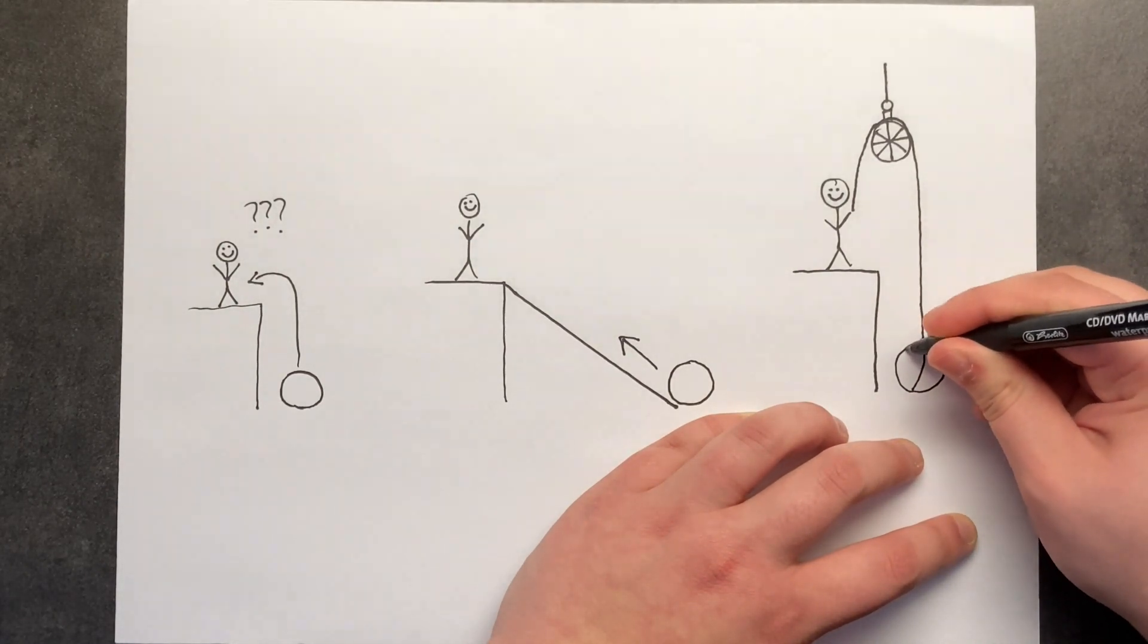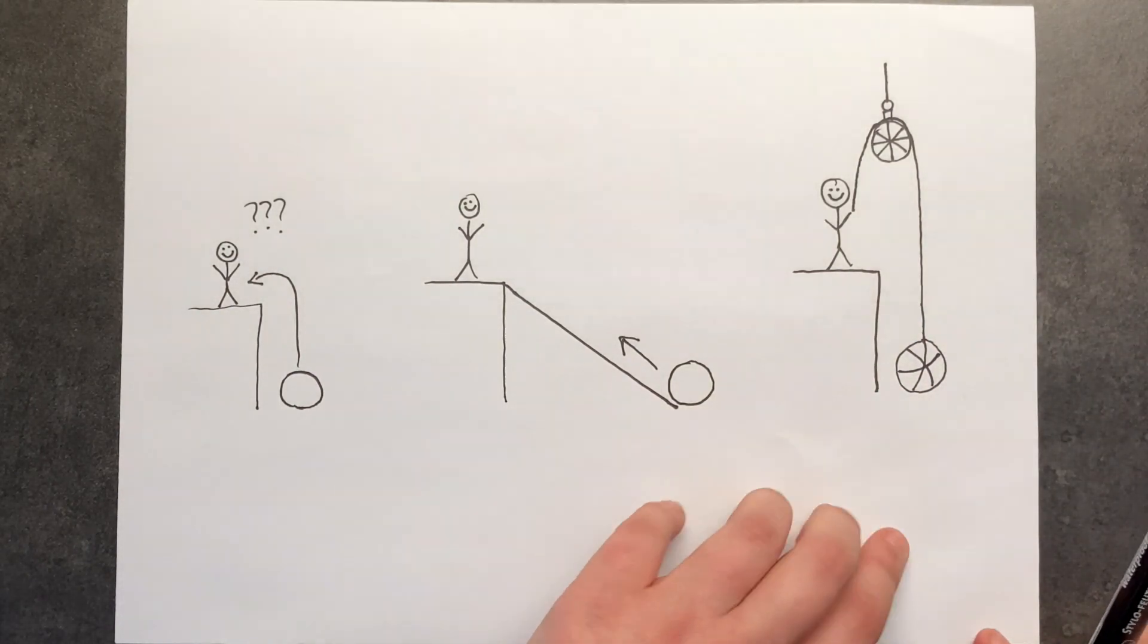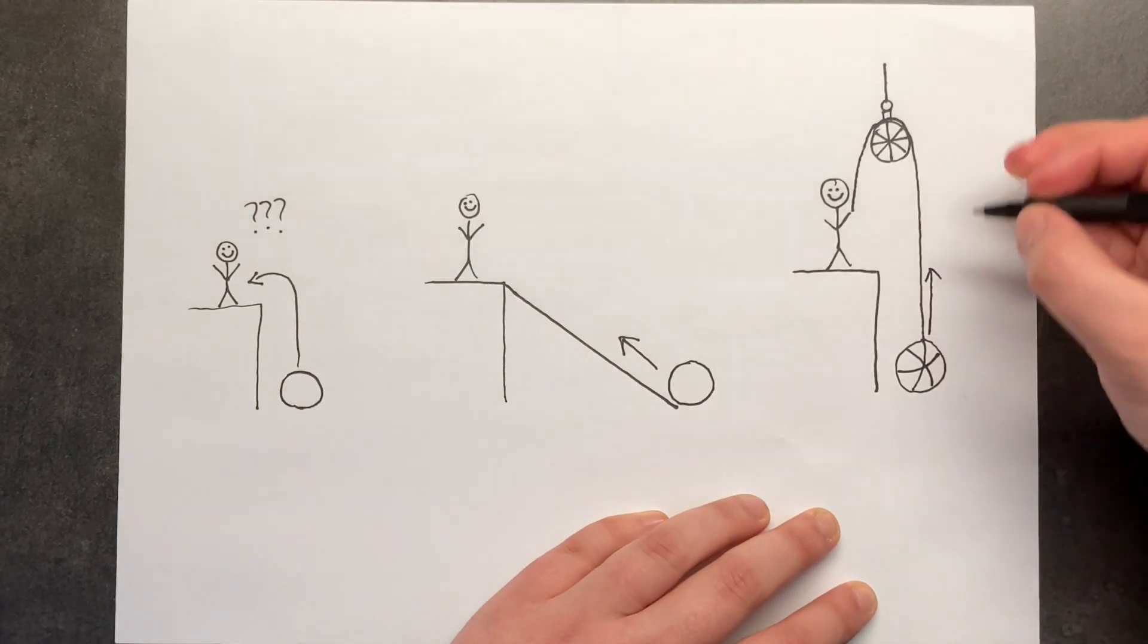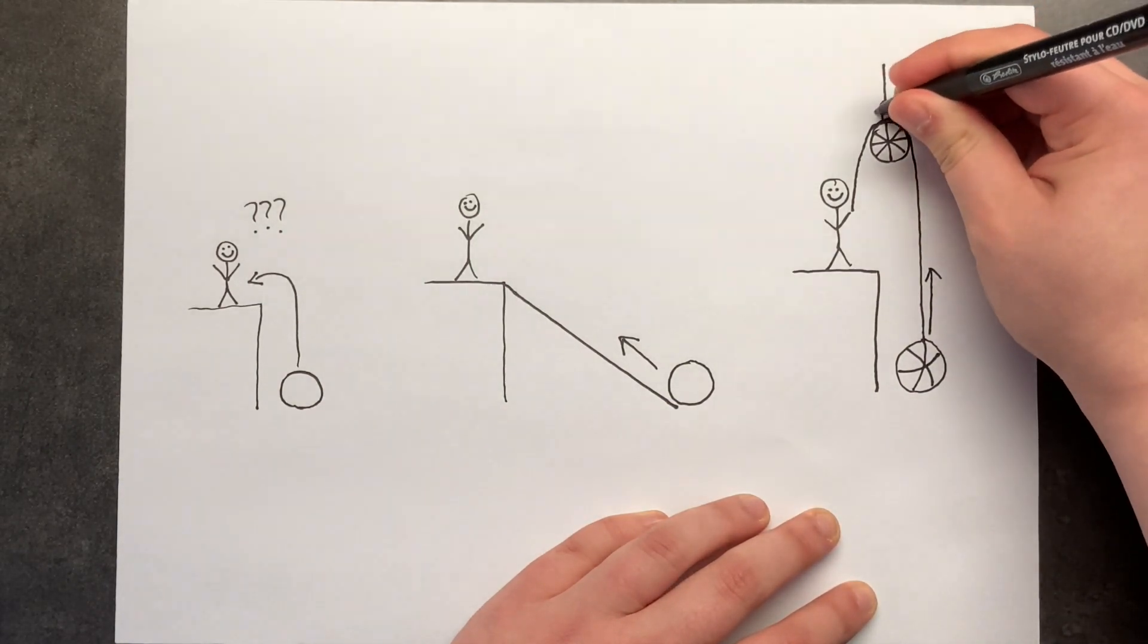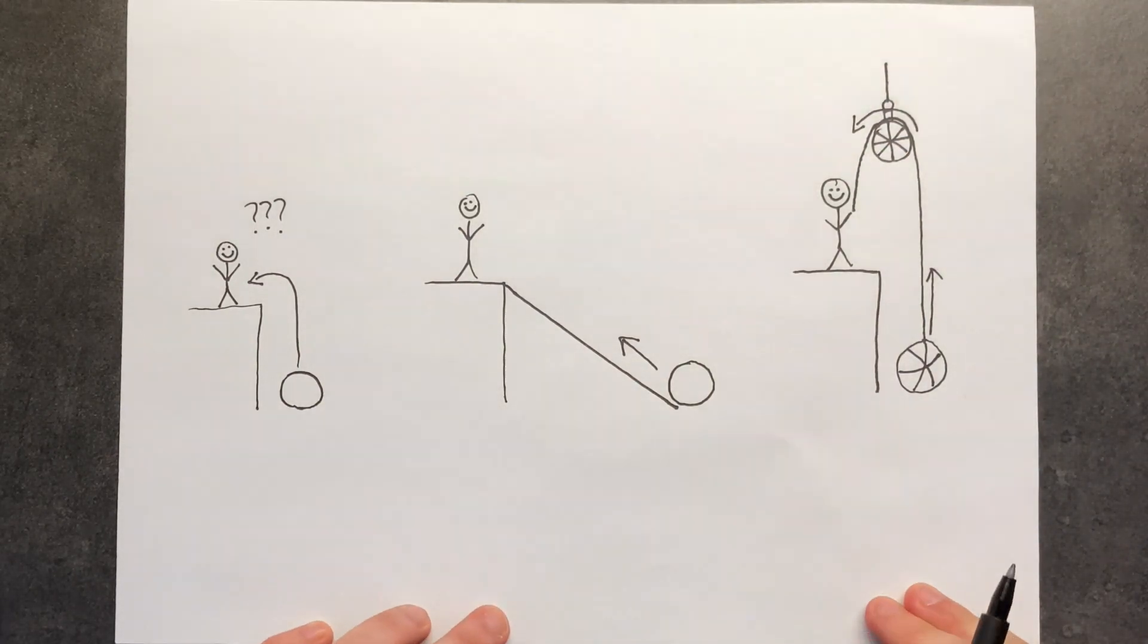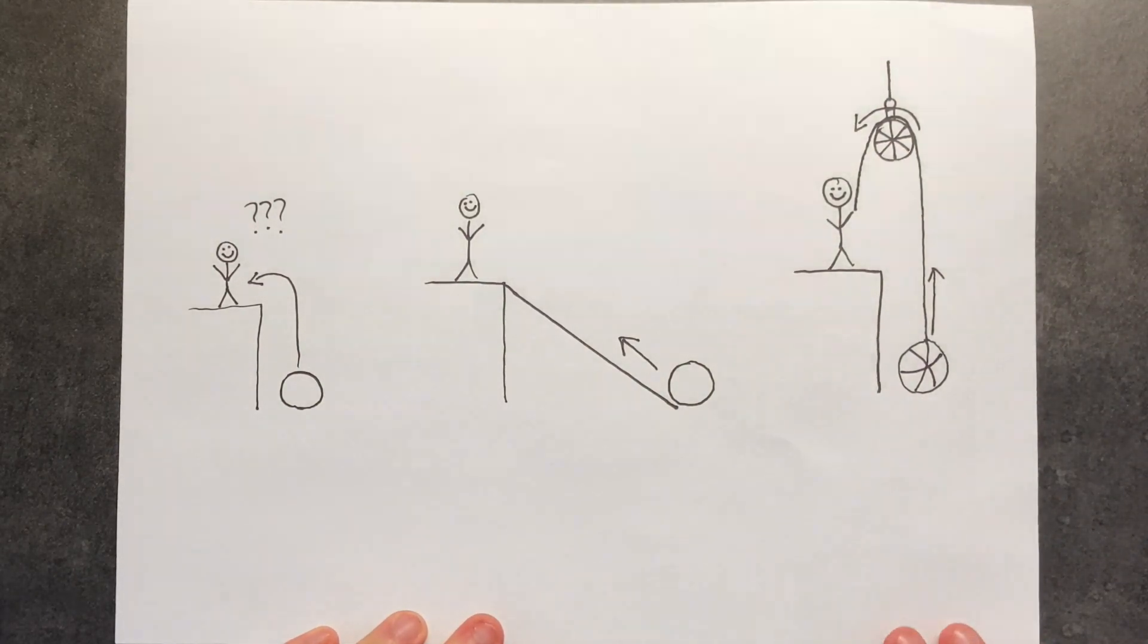You tie it nice and tightly and then when you pull the rope the heavy load will go upwards as you pull it around the pulley wheel and that is how you lift your heavy object.